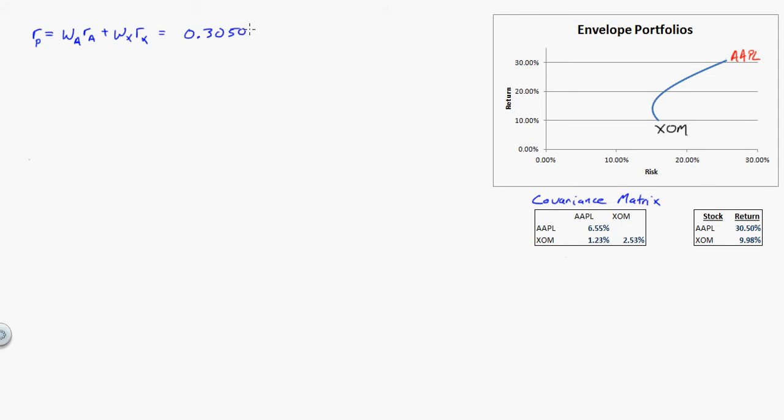So I know that the return for Apple is 0.3050 times the weight of Apple, plus for Exxon, 0.0998 times the weight of Exxon. So I vary those weights, and that's going to give me the return for that portfolio.